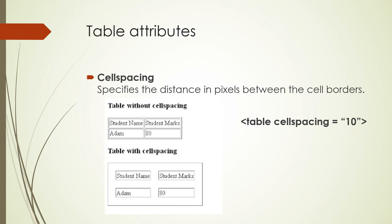This attribute is called cell spacing. This is the distance in pixels between the cell borders. The first example is a table without cell spacing — you will see the cells are right next to one another. The table below is a table with cell spacing, showing the space between the different cells. We insert this in the table tag — for example, cellspacing equals 10.